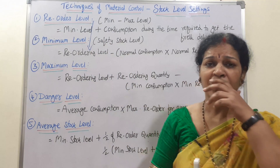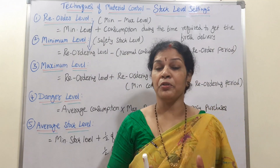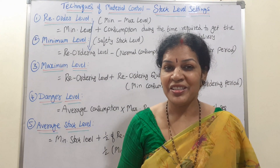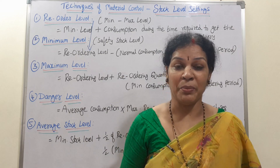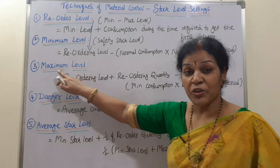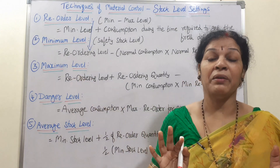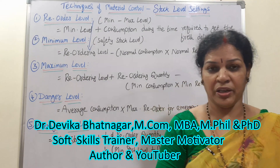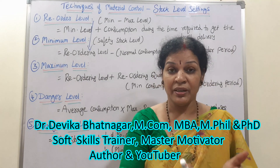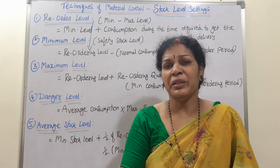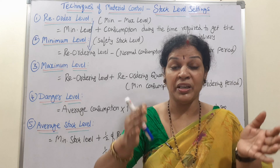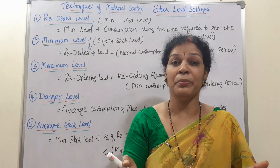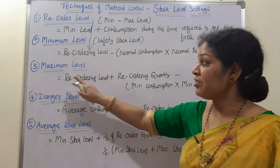The next one is maximum level. The material should not be overloaded or over-dumped in the organization because it is a wastage of capital — wastage of money. So what should be the maximum level of stock? For example, if the minimum is 10,000 units, the maximum might be 15,000 or 20,000. If we decide on 15,000, then stock must always be maintained between those two figures.